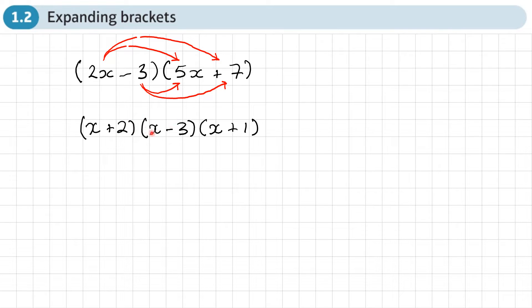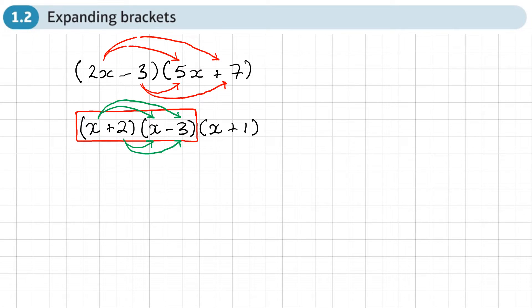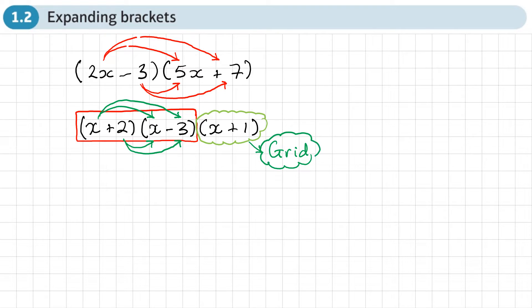However, when multiplying three sets of brackets, my suggestion would be to use whichever method you're comfortable with for the first two brackets. Expanding two brackets gives us a quadratic, and that quadratic then needs to be multiplied by the third bracket. Using arrows can get messy with so many terms, so I prefer to use a grid for that third multiplication.